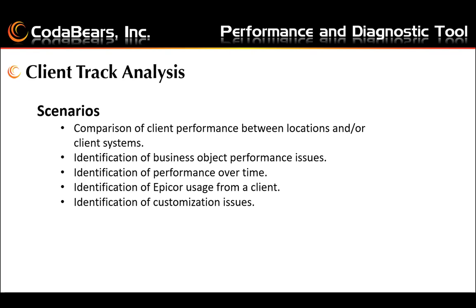However, CPU differences will probably not be determined because the tool captures execution time of method calls, not the time taken to open forms and render data. For identification of business object performance issues, if you suspect a business object performs poorly under certain conditions — for example, transaction entry slows down as data volume increases — you can monitor execution time of method calls during entry to measure the effect. You can also analyze performance over time and identify EPICOR usage from a client by reviewing the log to determine what activities a client engages in and the frequency of calls to business object methods.